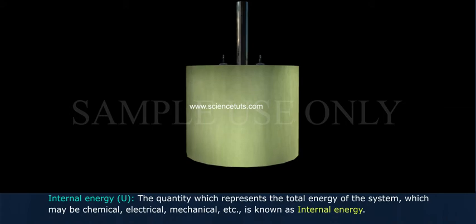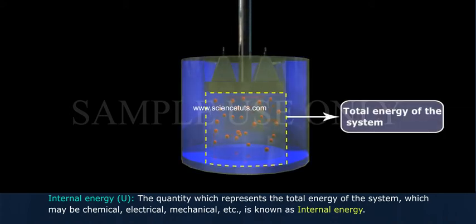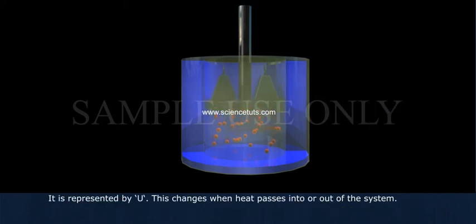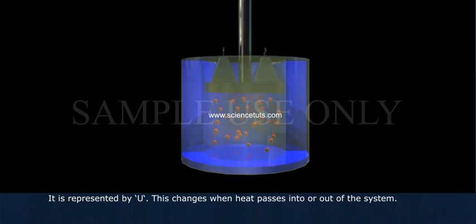Internal energy: The quantity which represents the total energy of the system, which may be chemical, electrical, mechanical, etc., is known as internal energy. It is represented by U. This changes when heat passes into or out of the system.